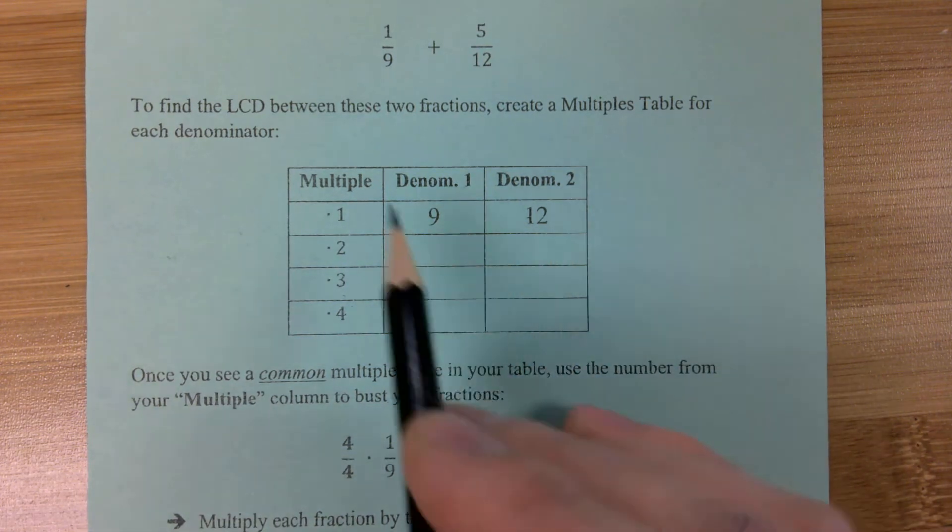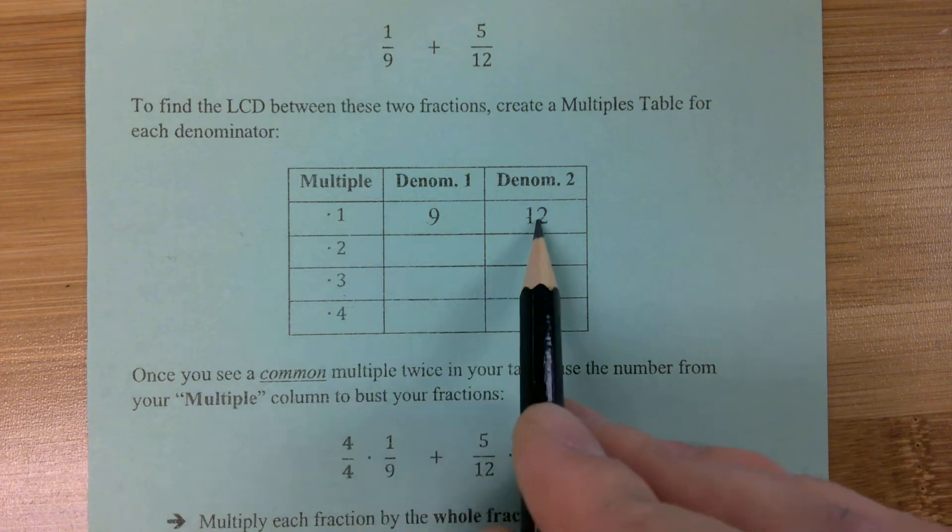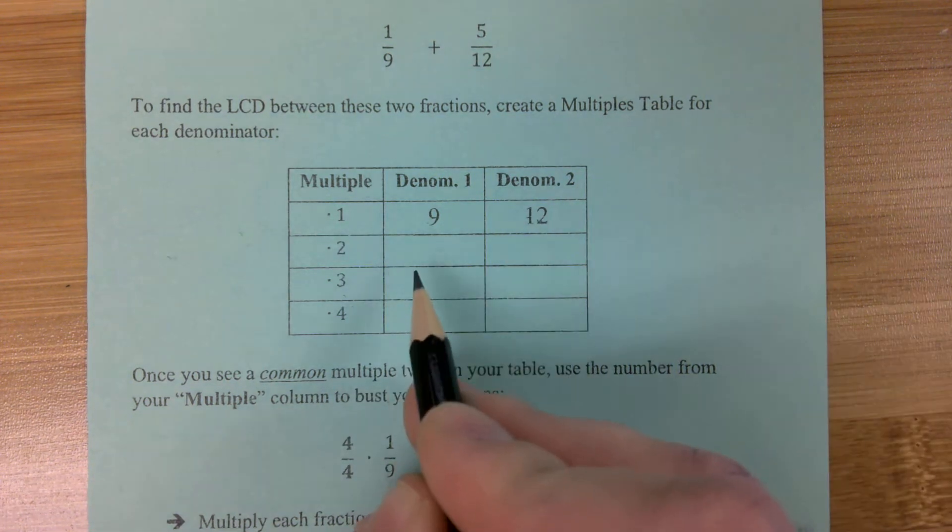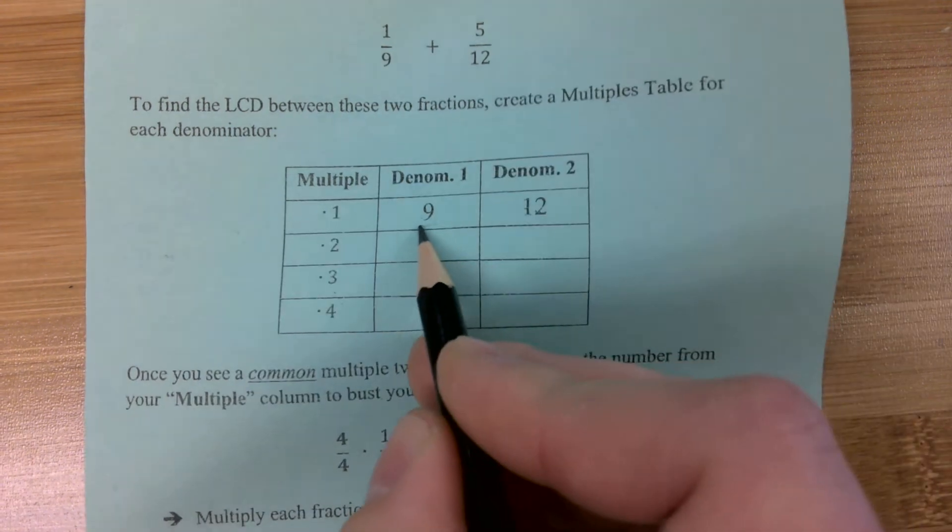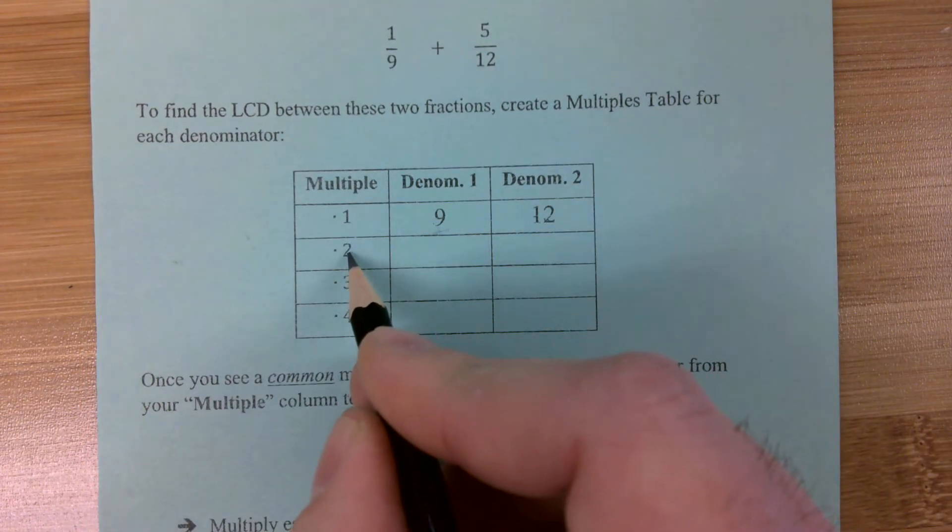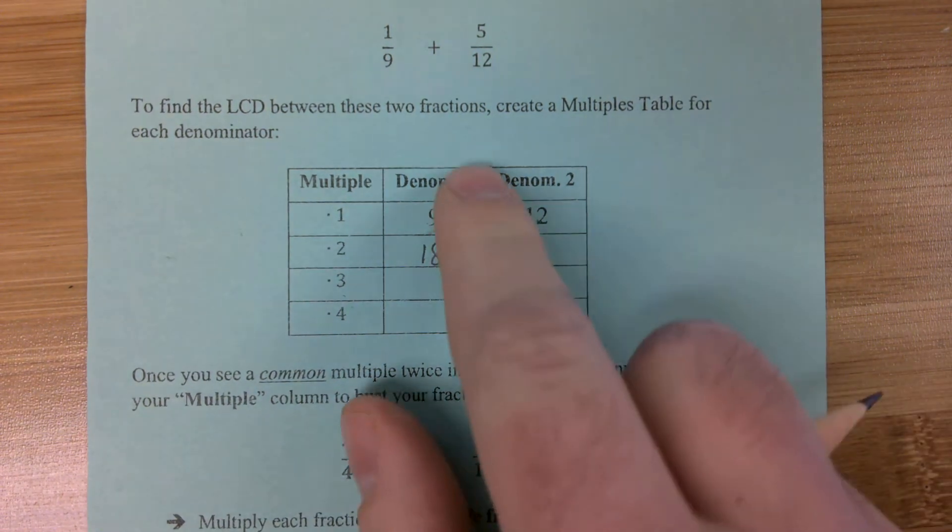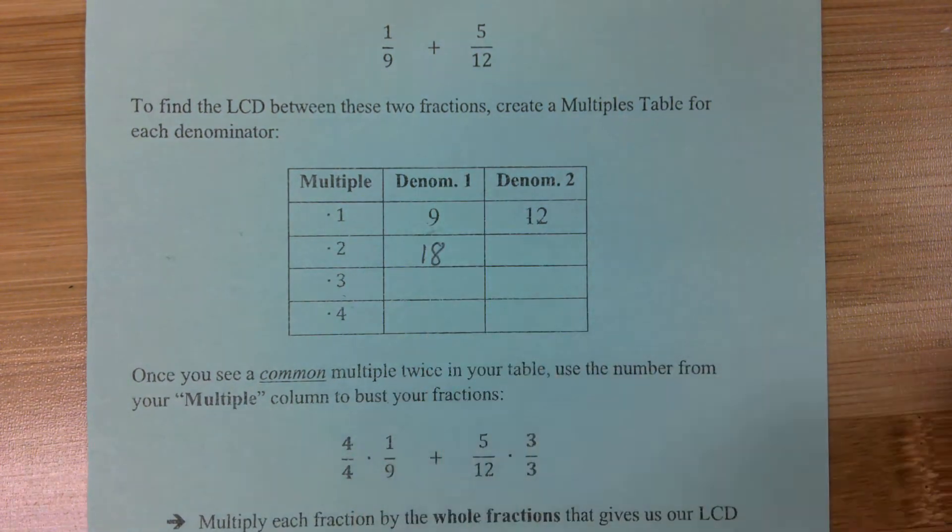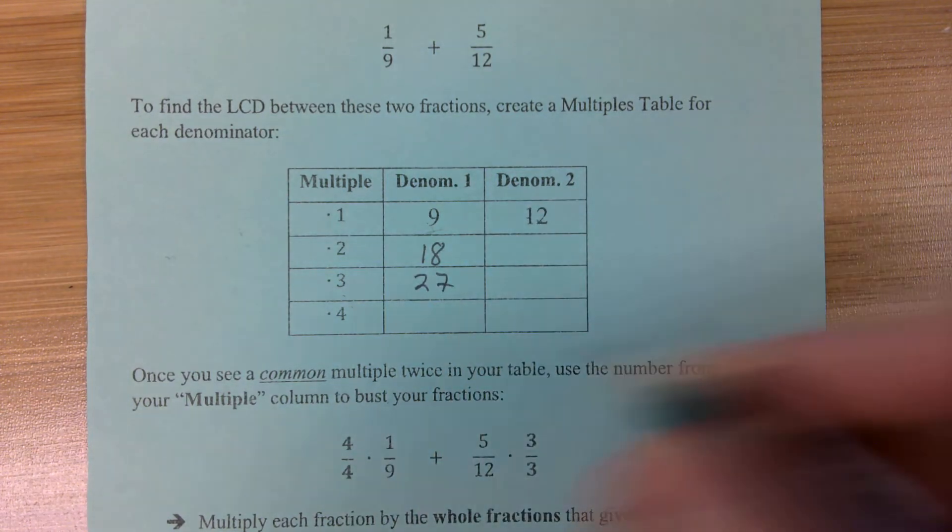In the first row, we can see that 9 times 1 gives us 9, and 12 times 1 gives us 12. But what's going to go in this second box here? Well, it'll be 9 times 2, which is 18. What's the next multiple of 9? 9 times 3? 27. And what about 9 times 4? 36.